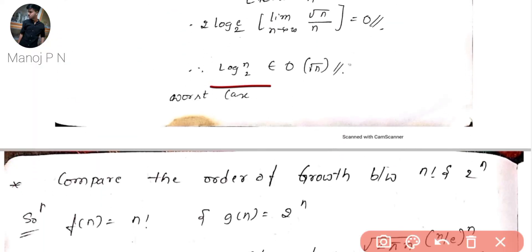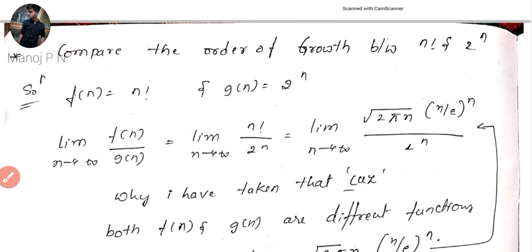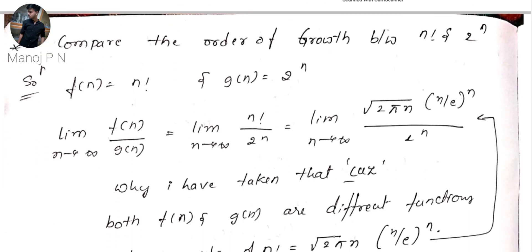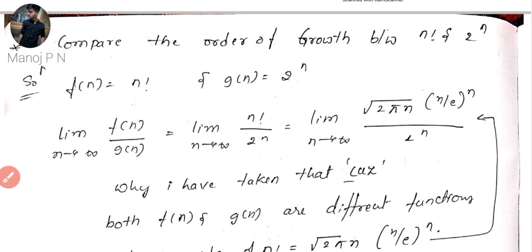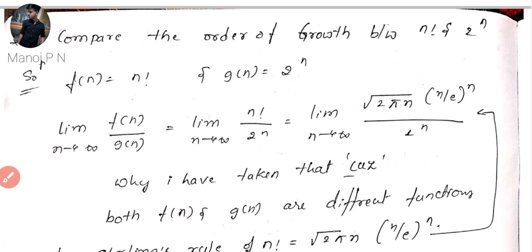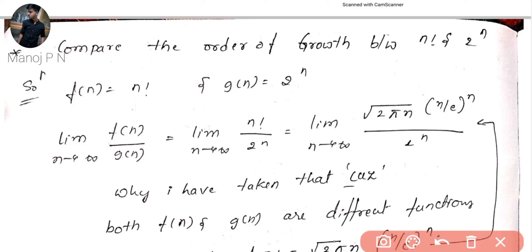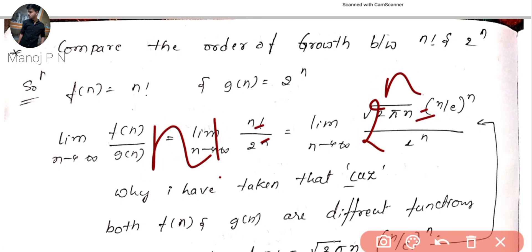So f(n) = log n base 2 belongs to O(root n). Now let's take another example: compare the order of growth of n! and 2^n. Here we have two different functions — n factorial, which is a factorial function, and 2^n, which is a normal numerical function.